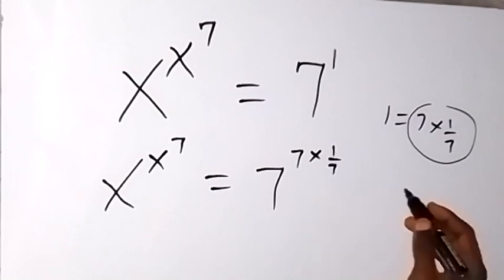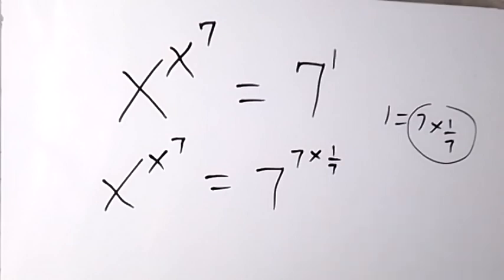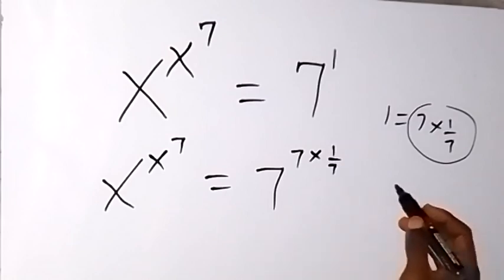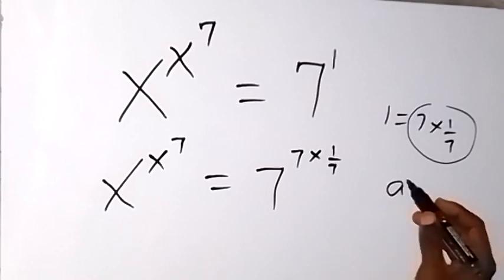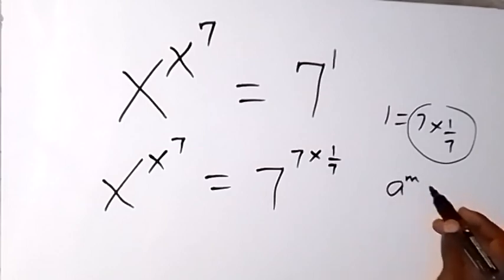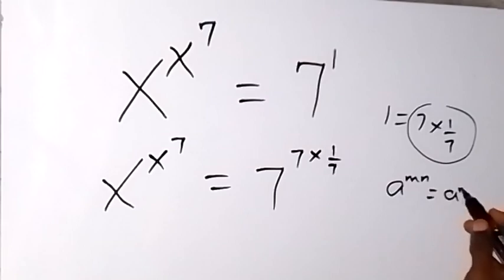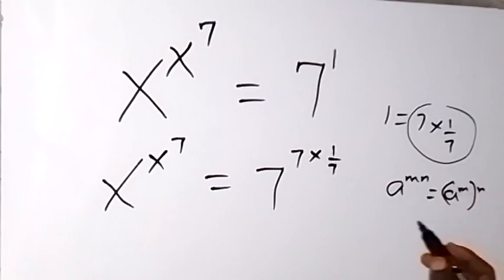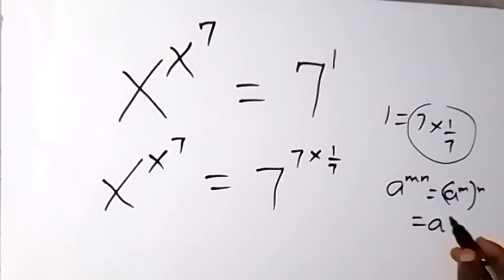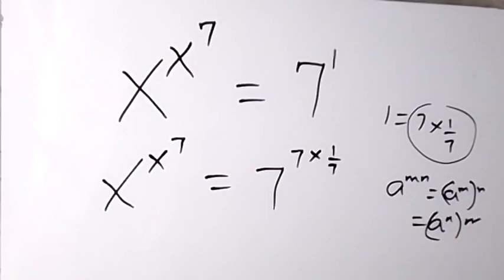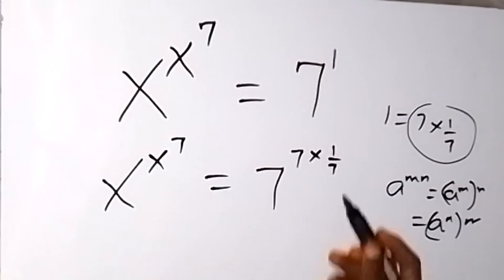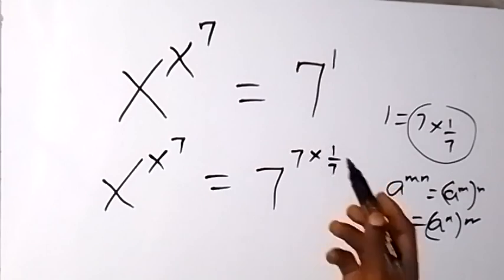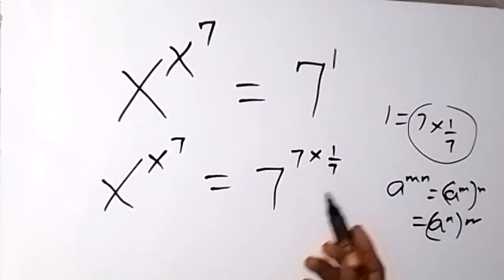And from the law of indices, we can separate the power. We have a raised to power m times n, which we can write as a raised to power m, then times n, or also as a raised to power n times m. So from there, let's take 1 over 7 inside, then take 7 outside.